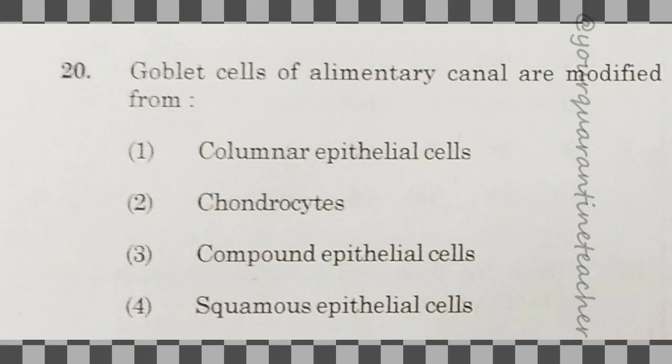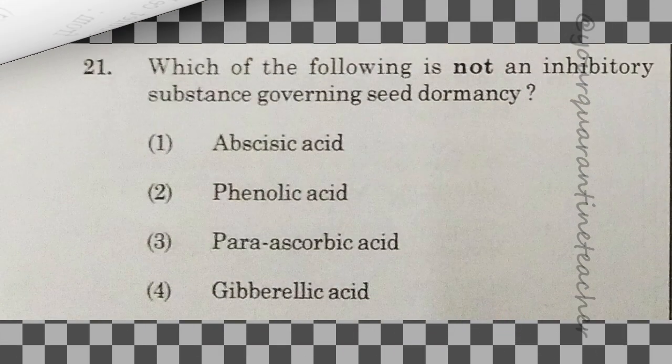Question number 20: goblet cells of the alimentary canal are modified from — option 1 — columnar epithelial cells. That is the answer.